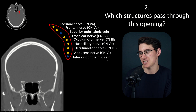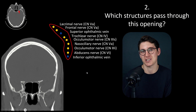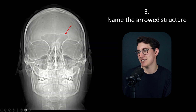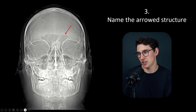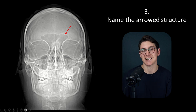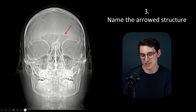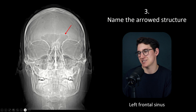That's a great piece of anatomy to learn — a common question that comes up in exams. In question 3, we're asked to name the arrowed structure. We've got a frontal radiograph — this is a scout image of the CT scan we just looked at. Let's lateralize: this is the left frontal sinus.